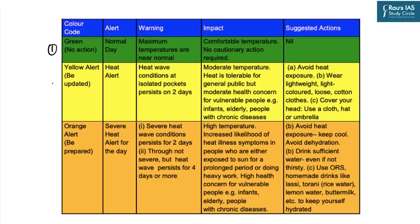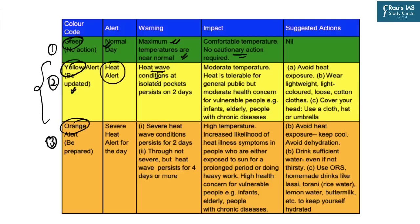There are three color codes given by IMD. The green color indicates a normal day with no heat waves — maximum temperatures are near normal and no cautionary action is required. The yellow alert — 'be updated' — is transmitted by IMD when heat wave conditions persist in isolated pockets for two days. Moderate heat is tolerable for the general public but moderate health concerns exist especially for infants, elderly people, and people with chronic diseases. Suggested actions include avoiding heat exposure, wearing lightweight, light-colored, loose cotton clothes, and covering the head using a cloth, hat, or umbrella.